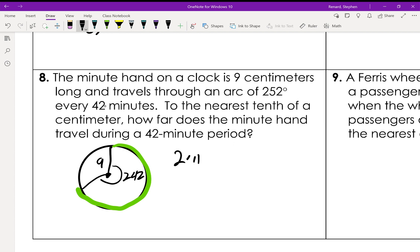2 times π times 9 times 252 over 360. We're going to drop that into our calculator, divide everything by 360, and we get 39.584. So we're going to go 39.6 centimeters.